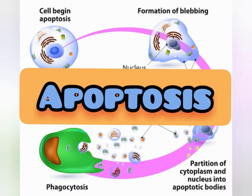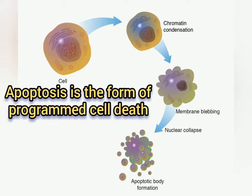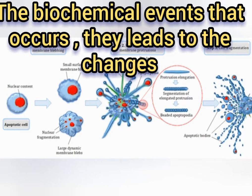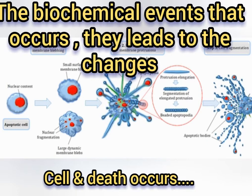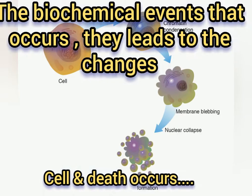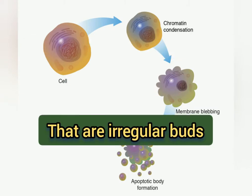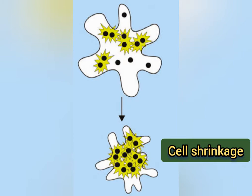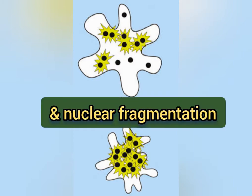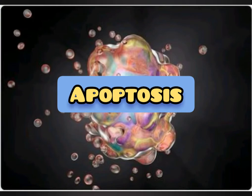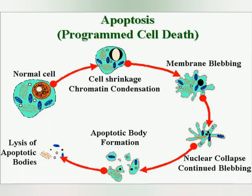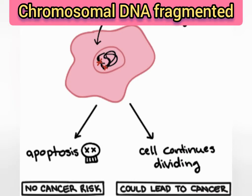Basically, apoptosis is a form of programmed cell death. The biochemical events that occur lead to changes in the cell and death occurs. These changes include blebbing, which are irregular buds, cell shrinkage, and nuclear fragmentation. In apoptosis, chromatin condensation occurs and chromosomal DNA is fragmented.